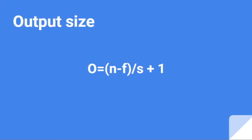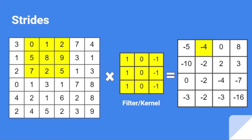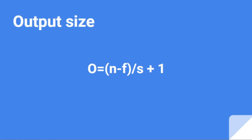Now let's see how we get the 4 by 4 output size. We have an equation: O = (N minus F) / S + 1. Here, N is the input tensor size, F is the filter size, and S is the stride. In our case, the input tensor is 6 by 6, the filter is 3 by 3, and the stride is 1. Applying the equation: (6 minus 3) / 1 + 1 = 3 + 1 = 4. So our output is 4 by 4, confirming the equation is correct.